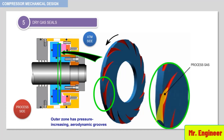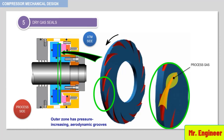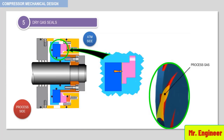These grooves compress the incoming gas as the shaft and rotating seat rotate, and are arranged on the high-pressure side of the seal in order to achieve the necessary pumping effect. The buildup of pressure in the sealing gap results in the formation of a stable gas film, as depicted here.